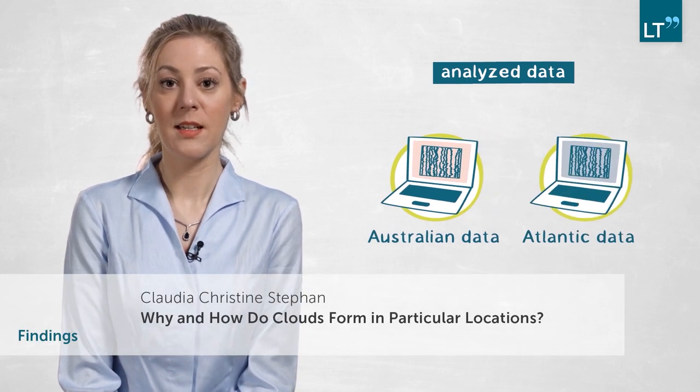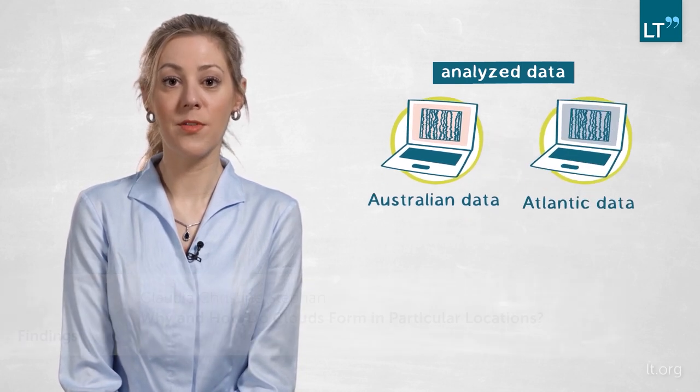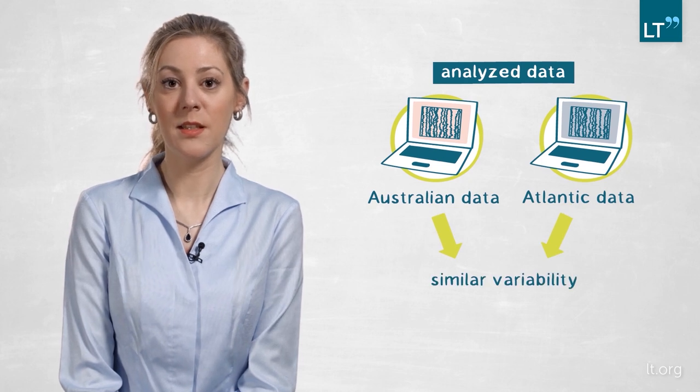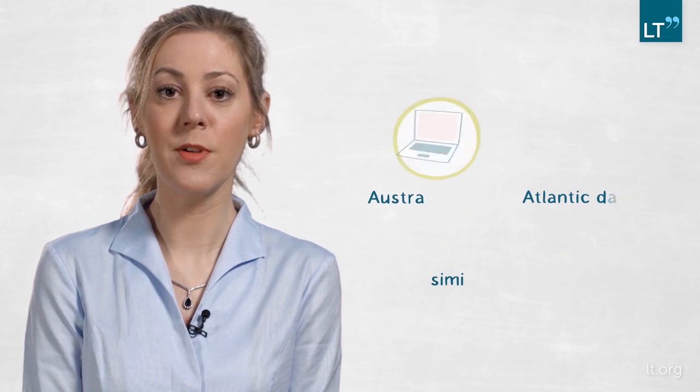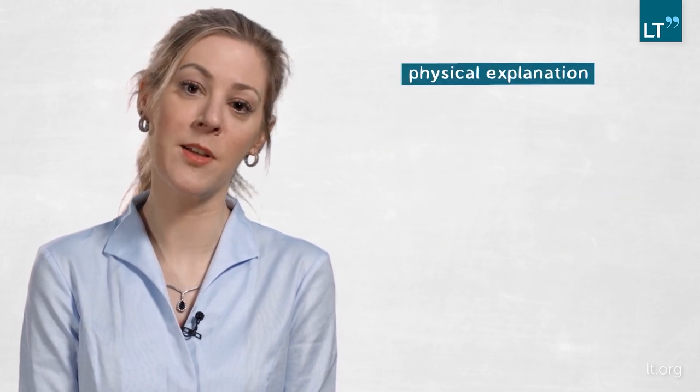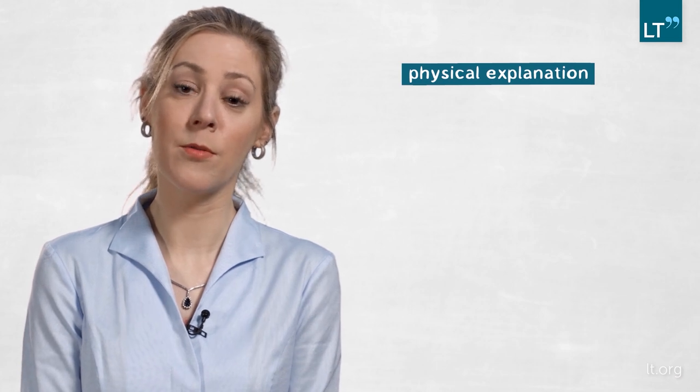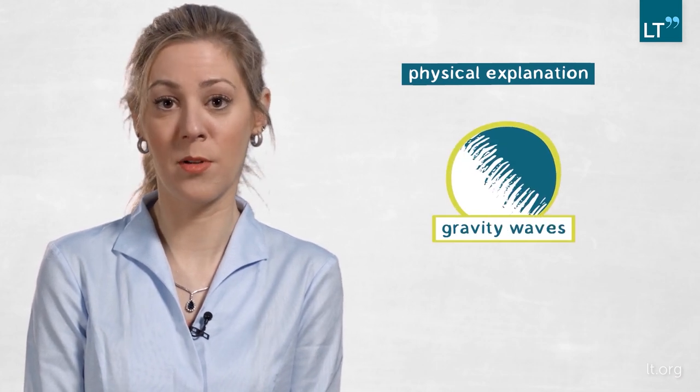So the first question we asked was whether similar variability is found at Darwin, as was reported over the Atlantic. And the answer to that is yes, we find very similar variability in the dataset that we analyzed. The second question is, can we find a plausible physical explanation for this variability? And we looked at whether or not gravity waves could serve as a plausible explanation.